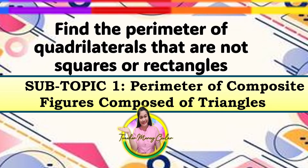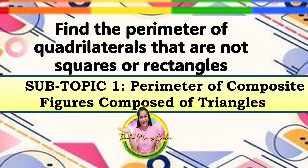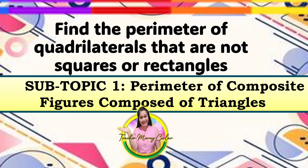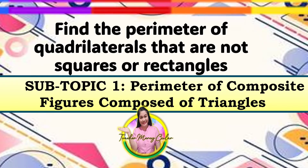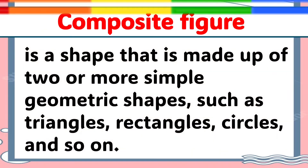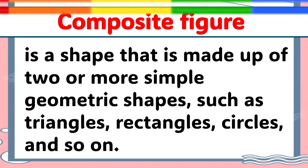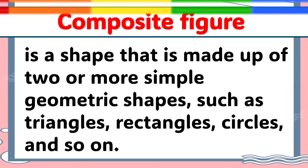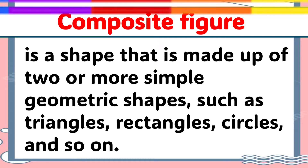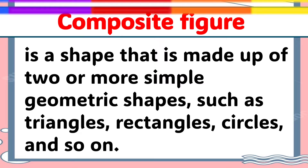In today's lesson, we are going to calculate the perimeter of composite figures composed of triangles. As a short review, a composite figure is a shape that is made up of two or more simple geometric shapes such as triangles, rectangles, circles, and so on.